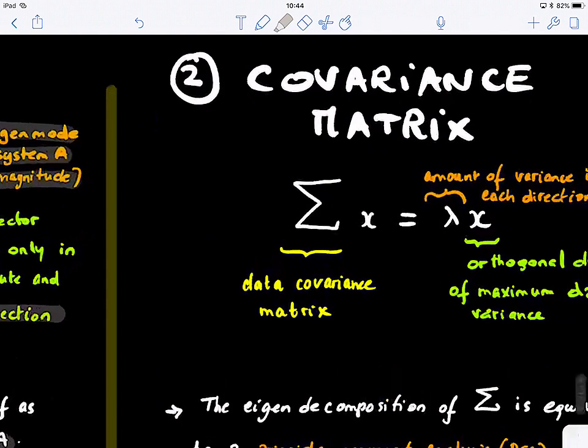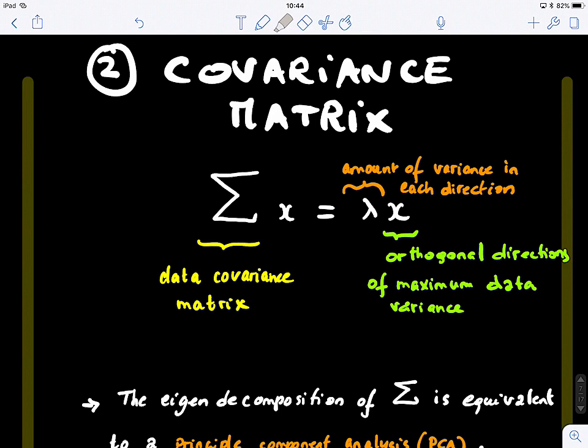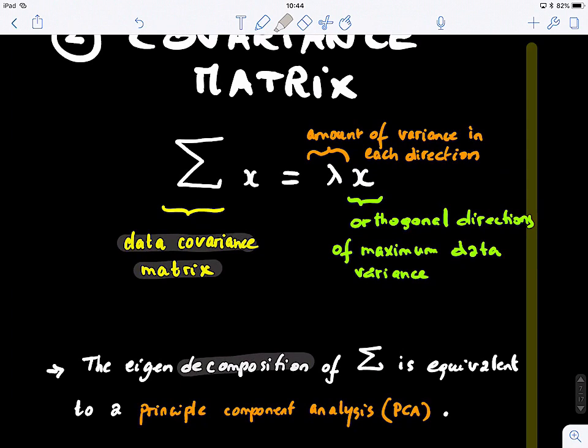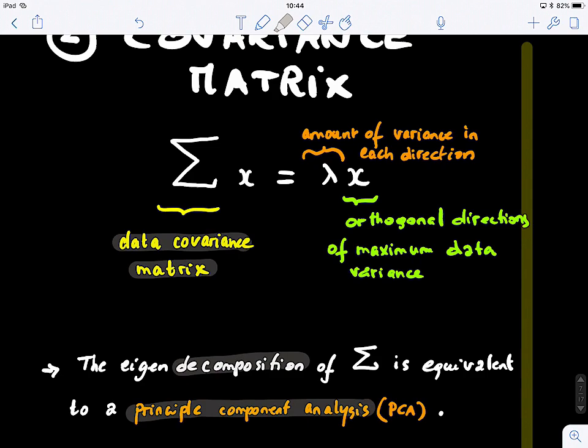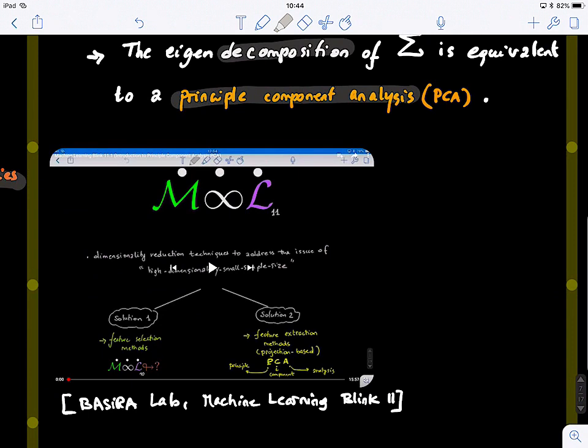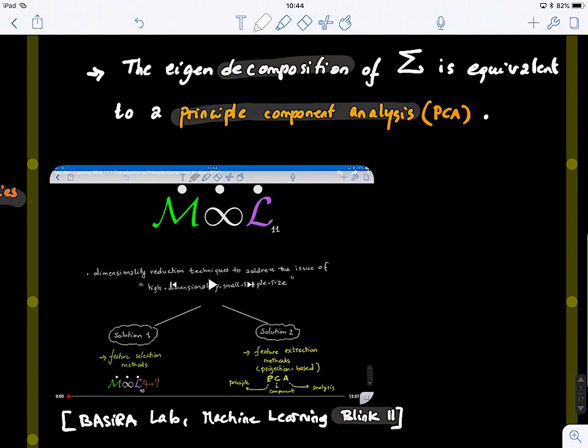Now, if you've taken machine learning before, you know that when we have a covariance matrix of a particular dataset and we perform the eigen decomposition of the covariance matrix, this is exactly equivalent to performing PCA — principal component analysis. If you look at this video on the Balceria Lab channel, machine learning Blink 11, I explain why the eigen decomposition of a cloud of data points, for example, works this way.